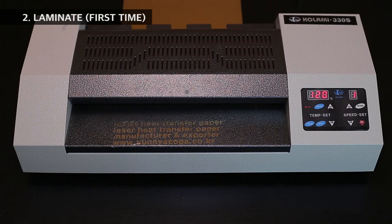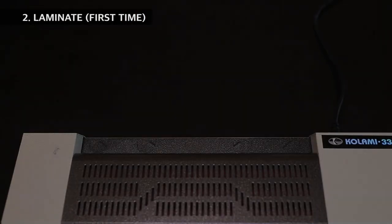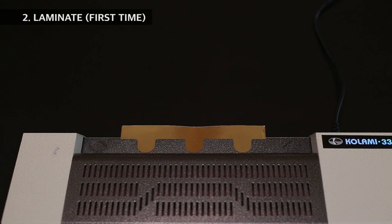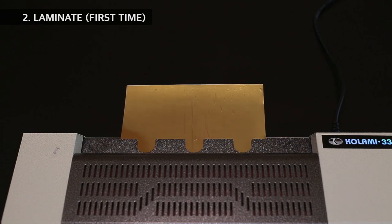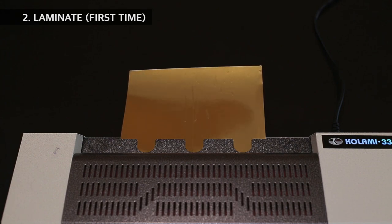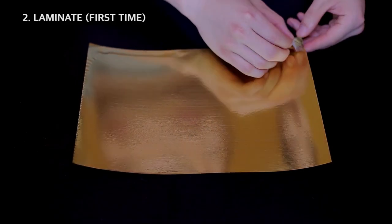Feed the papers through the machine. Make sure that the papers are not curling up as this could cause the machine to jam. If the machine does jam, stop it straight away and press the reverse button to remove the papers.